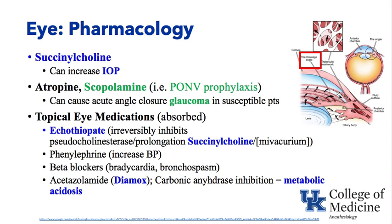Any medication put in the eye can be absorbed. Another one is Diamox, or acetazolamide, which can be used for glaucoma. It is a carbonic anhydrase inhibitor — when it inhibits carbonic anhydrase, a patient urinates bicarbonate and you can get a metabolic acidosis. So if someone is taking Diamox and you draw a blood gas and see a metabolic acidosis, that may be the explanation.